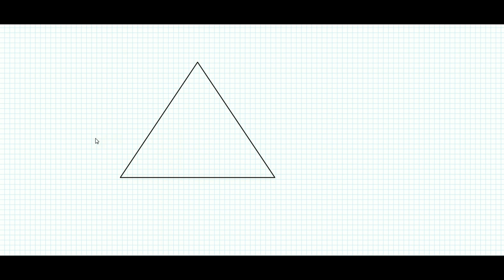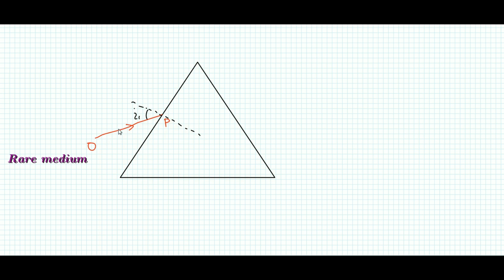Now I am going to draw the ray diagram. This is the angle of incidence i1, and this is the normal. At this surface, refraction happens. When a ray of light passes from a rarer medium to a denser medium — this is air and this is glass — it bends towards the normal. This is the refraction event happening on this surface.